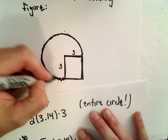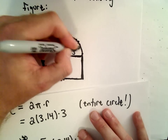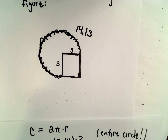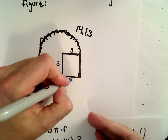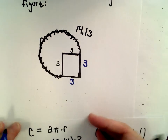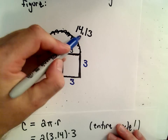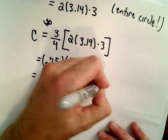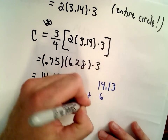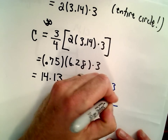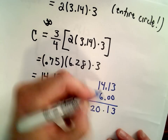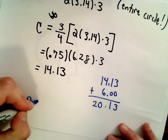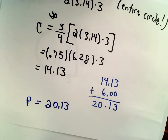The distance around the circle portion is 14.13. We also have to include the perimeter of the square sides. Since it's a square, this side is 3 units and this side is 3 units. So we take 14.13, add 3, and add another 3 — or equivalently, add 6. So 14 plus 6 gives us 20, meaning the perimeter of our figure is 20.13 units.